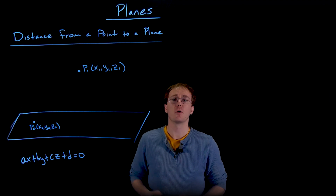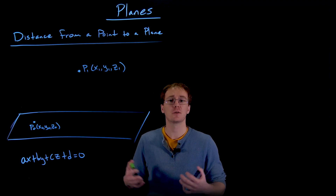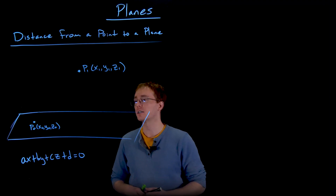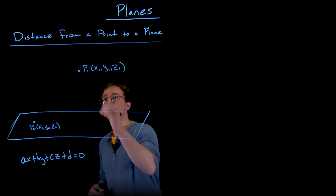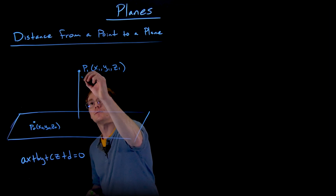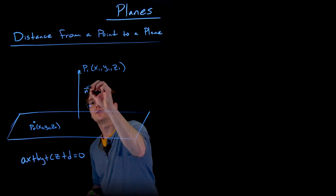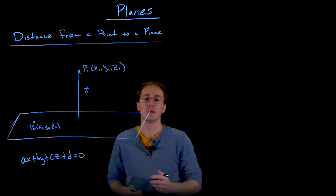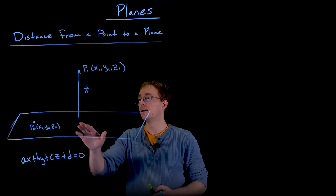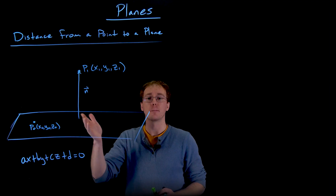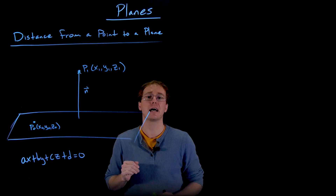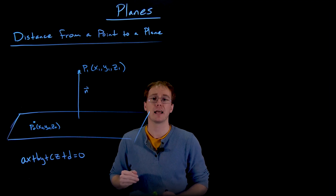We're just going to add a little bit more to the picture here to figure out how this process is going to work. We know that we have a normal vector that comes out and is orthogonal to our plane. We also know that the shortest distance from our plane to our point is going to be parallel to that normal vector n.